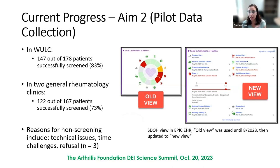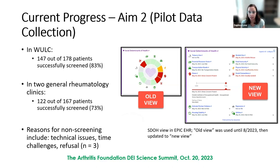When we started, the SDOH data was housed in the social determinants of health wheel on the left-hand side of EPIC. But EPIC has now changed the view, and now you can see each of the domains very clearly, highlighted in different colors.